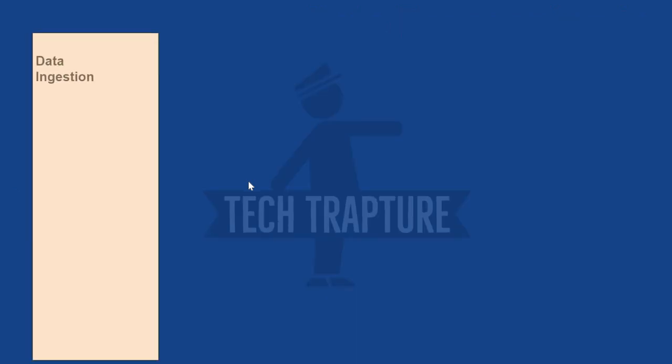The first step in data processing is data ingestion — getting your data into the cloud. For real-time or streaming data, the entry point is Cloud Pub/Sub. Your data can be ingested into Pub/Sub and then processed with different services for streaming, or it can be used for asynchronous messaging. Pub/Sub communicates asynchronously with minimal latency with loosely coupled applications.